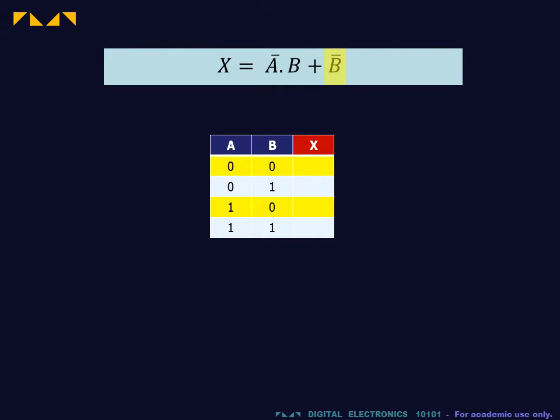We will consider first the two-input case. In the expression shown, the term B bar consists of the first and third rows of the truth table.